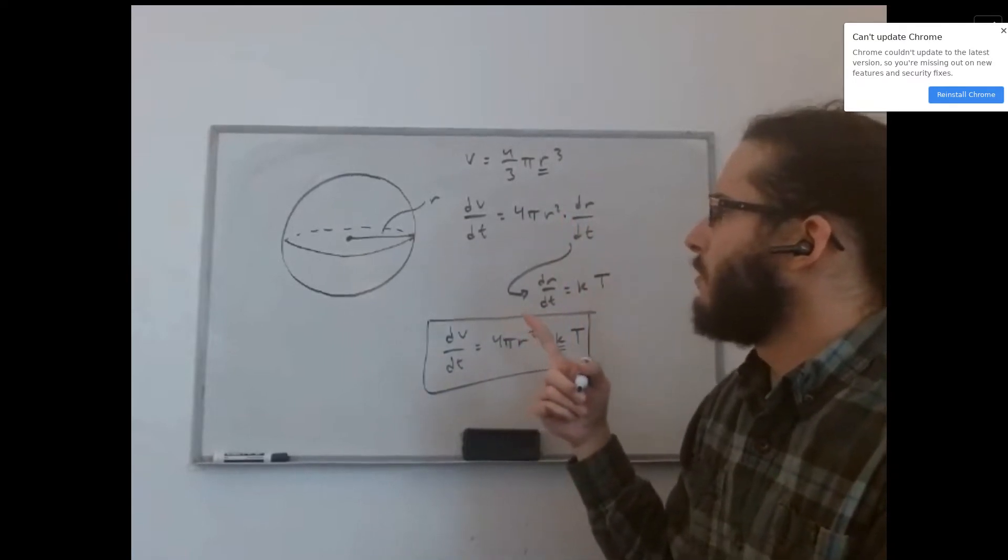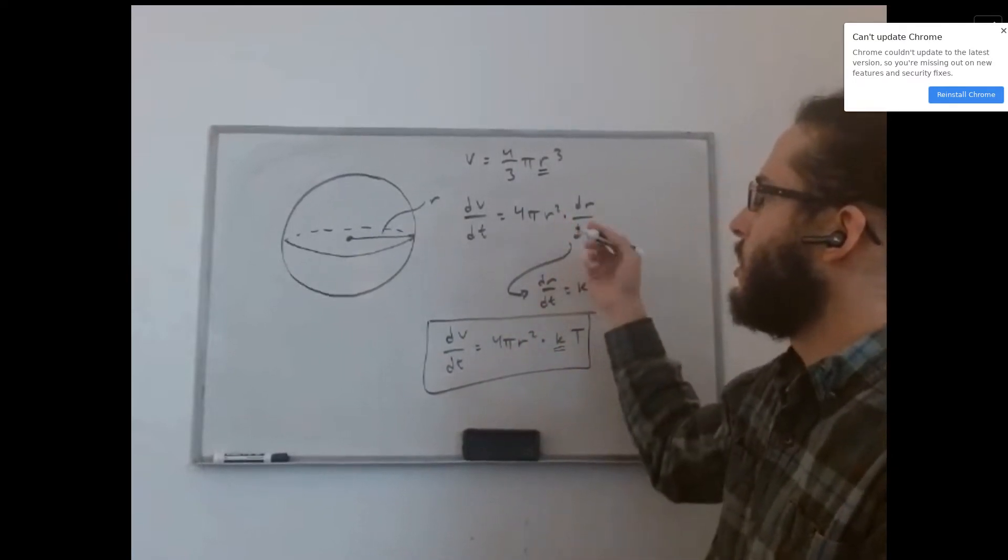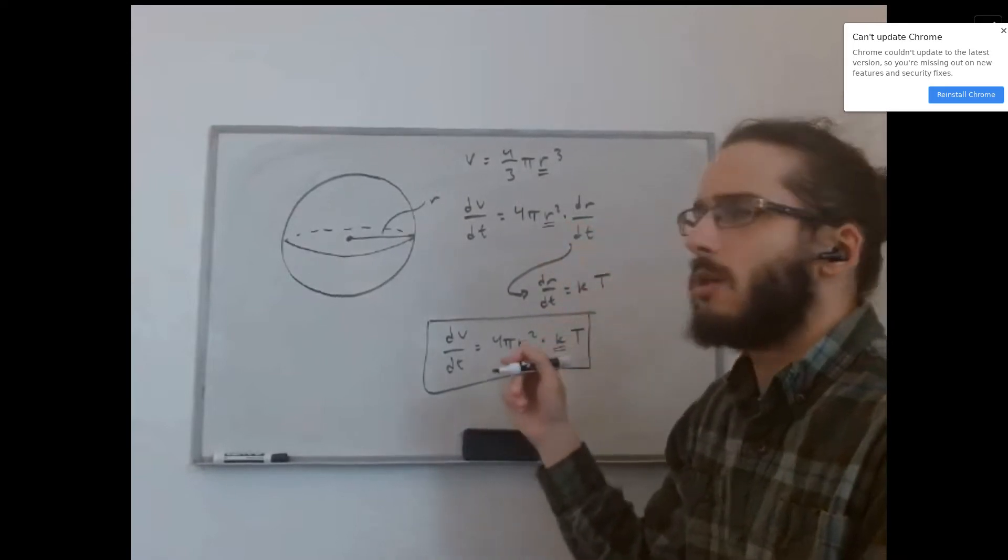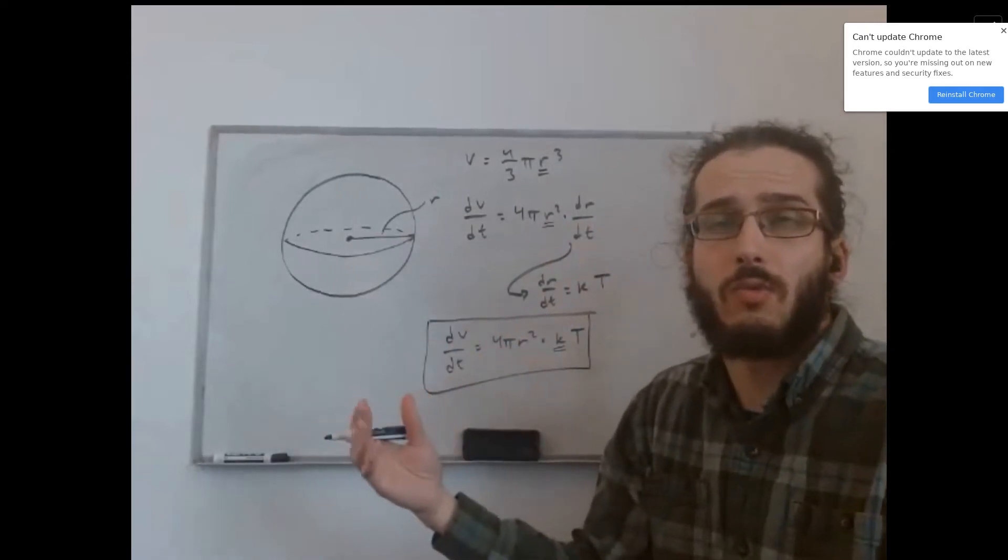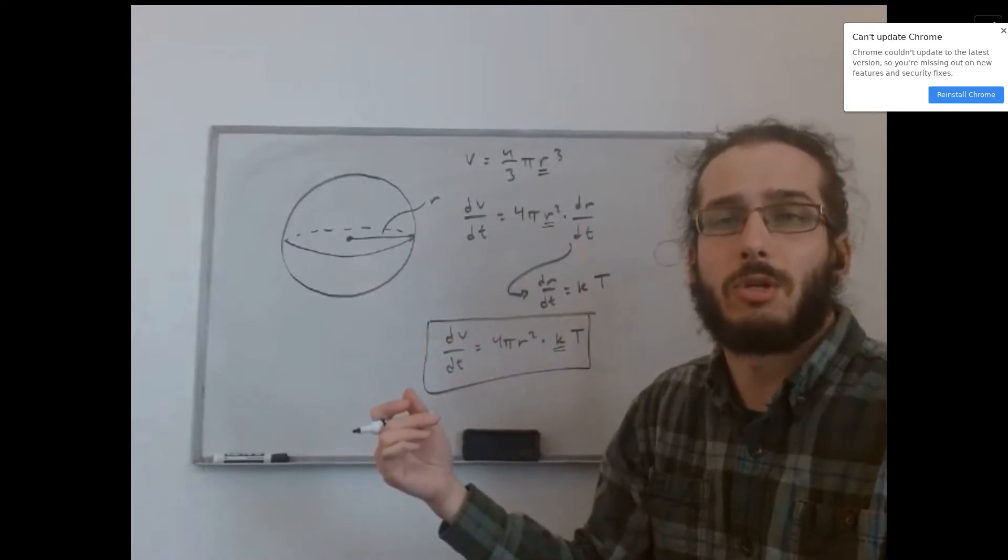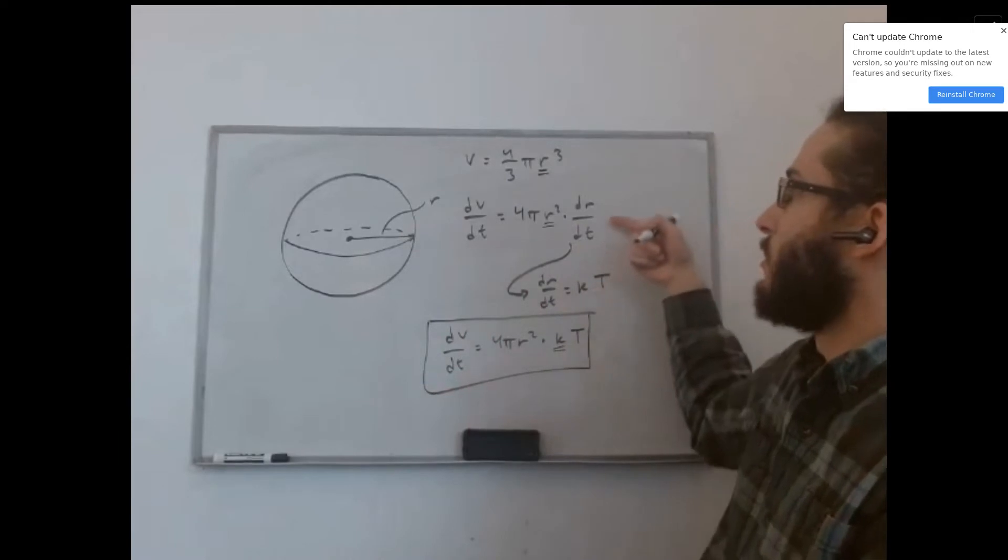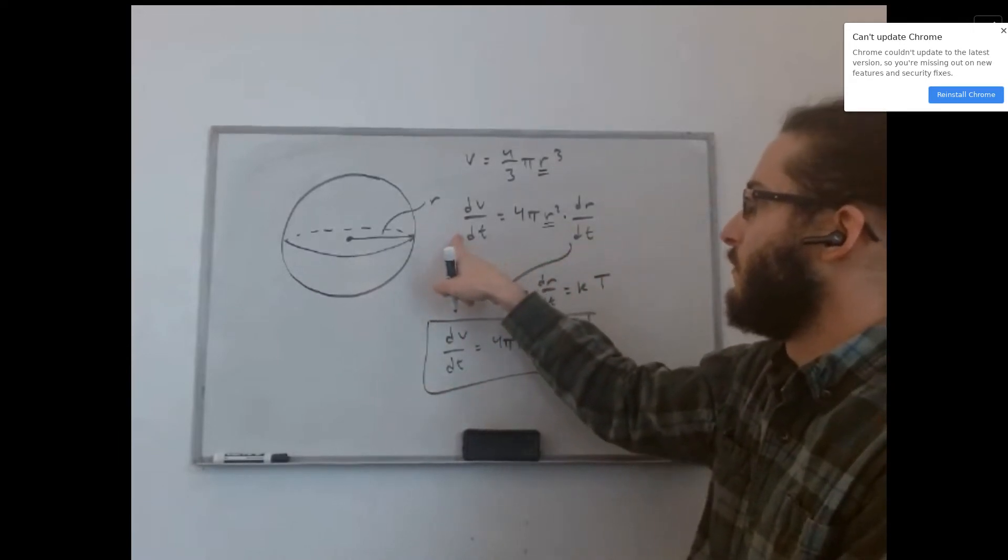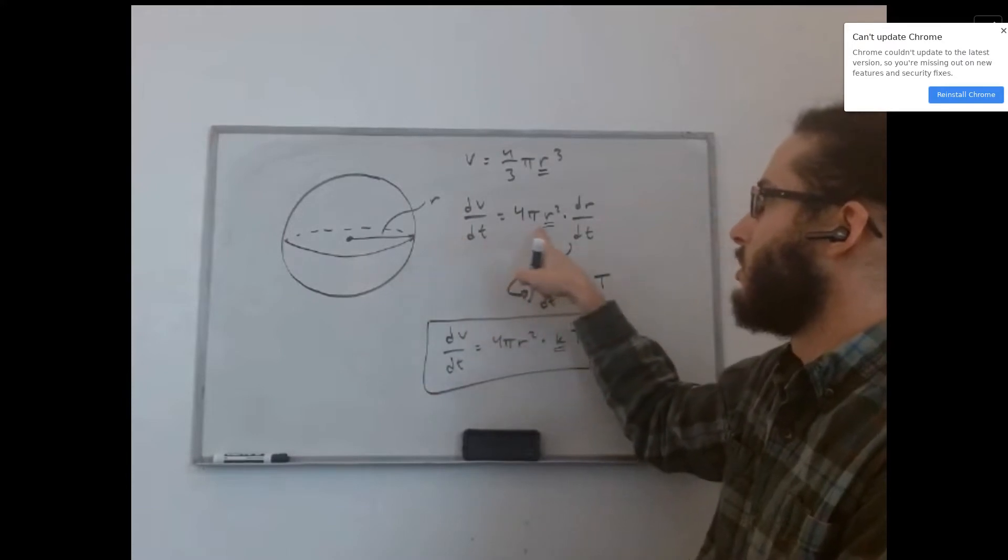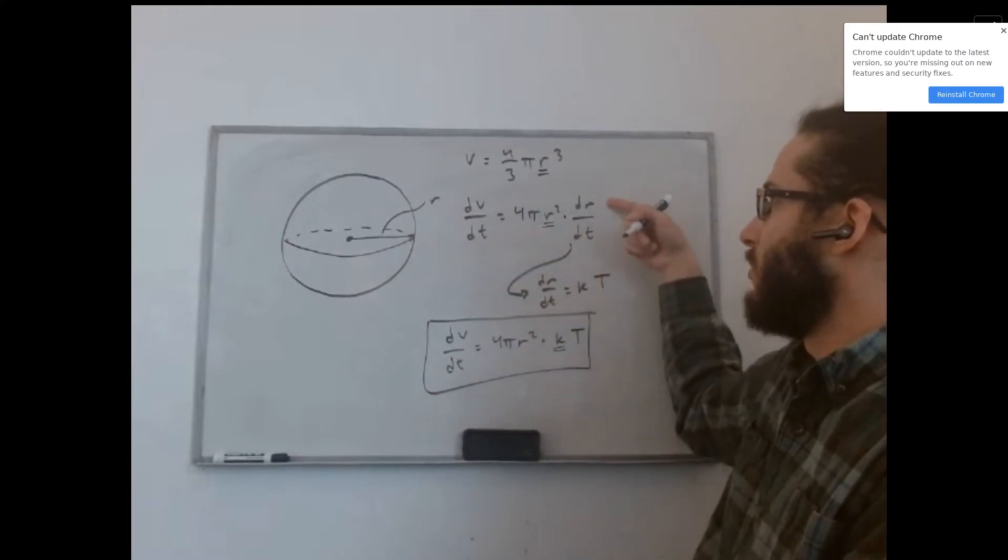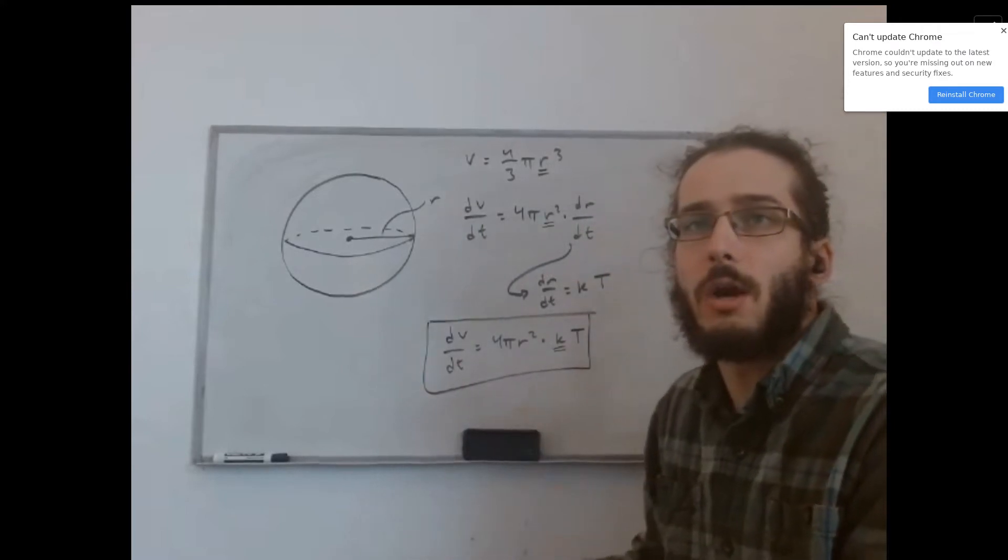Now, remembering that the radius is implicitly a function of time here, because we are told that the radius increases over time in proportion to the temperature of the glass, we need to remember to multiply by dr dt here, because our derivative is with respect to time, and since the radius is implicitly a function of time, the chain rule says that we need to multiply by dr dt here.